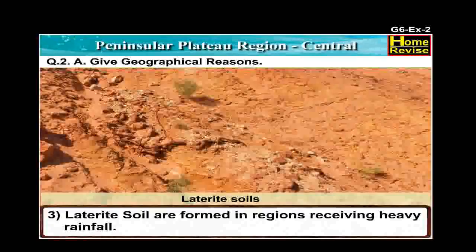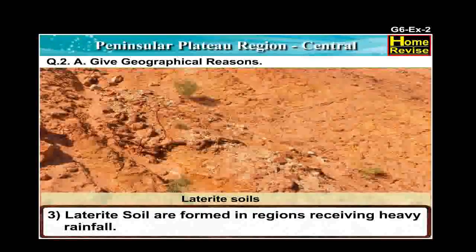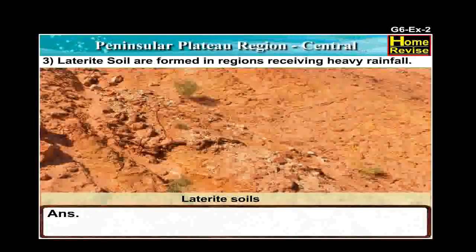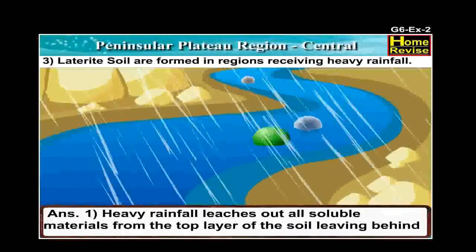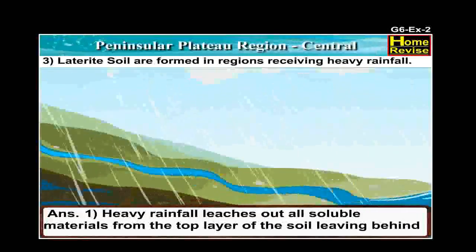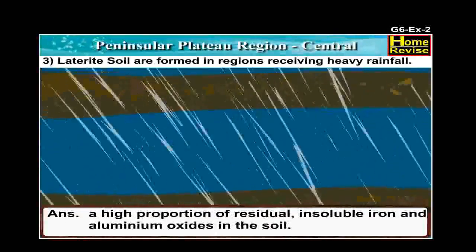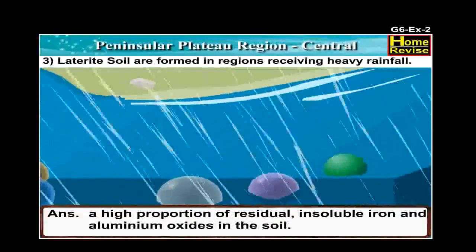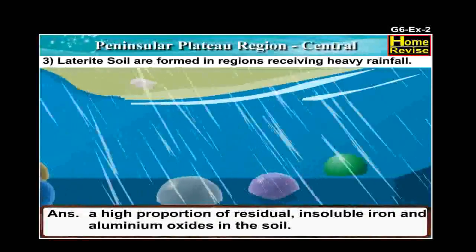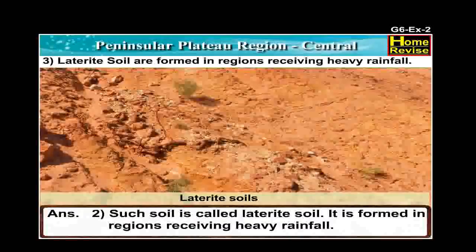Number 3: Laterite soils are formed in regions receiving heavy rainfall. The answer is: Heavy rainfall leaches out all soluble material from the top layer of the soil, leaving behind a high proportion of residual, insoluble iron and aluminum oxides in the soil. Such soil is called Laterite soil. It is formed in regions receiving heavy rainfall.